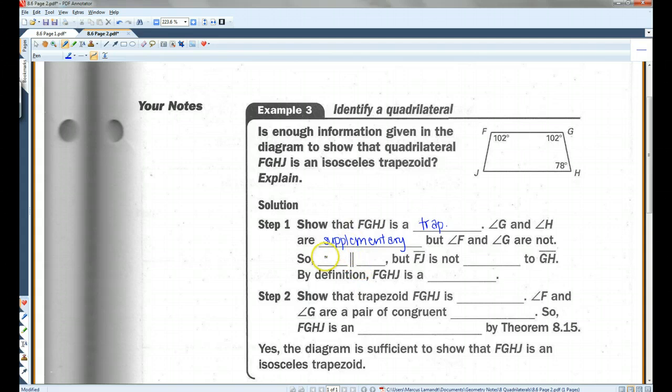So FG is parallel to HJ, but FJ is not parallel to GH, which is exactly what we need. We need exactly one pair of parallel sides. By definition, FGHJ is a trapezoid. So now we've shown that it's a trapezoid.